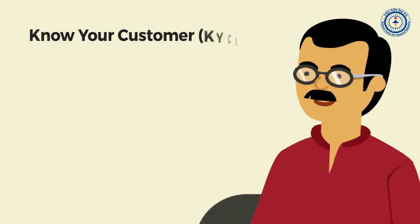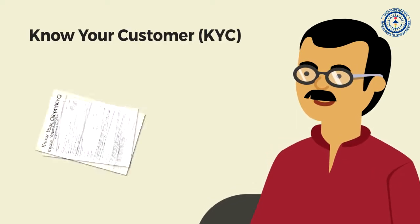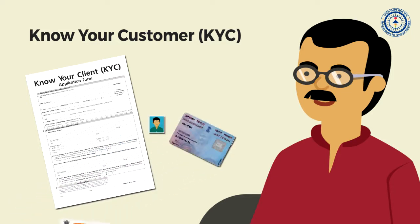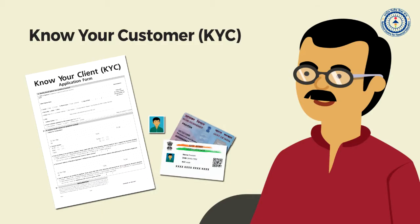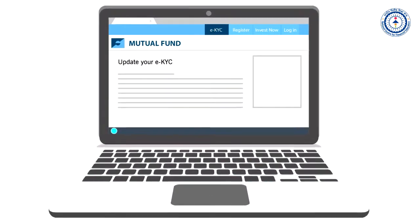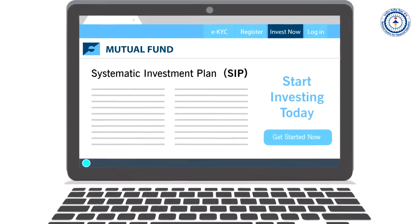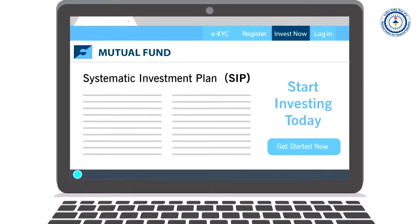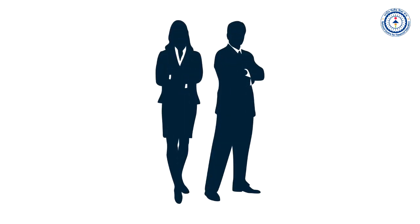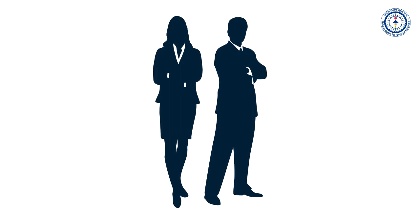Naveen's father explains that he needs to do a Know Your Customer or KYC by filling out a form with his photograph and ID and address proof. Once the KYC is done and updated in the system, he can invest through SIP into any mutual fund online at the mutual fund website or through a platform, or offline through a financial advisor.